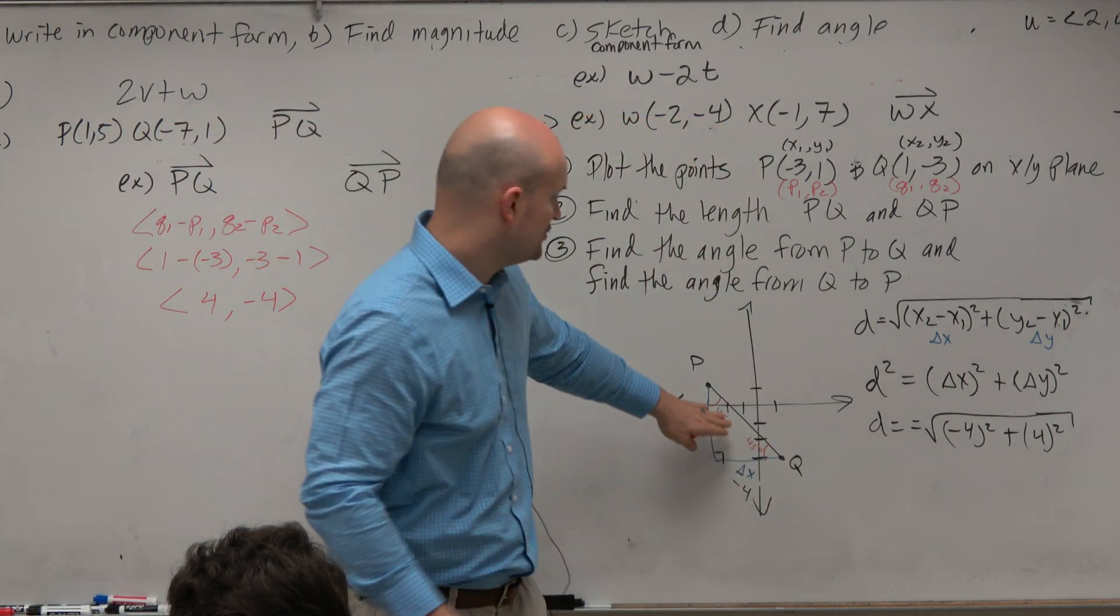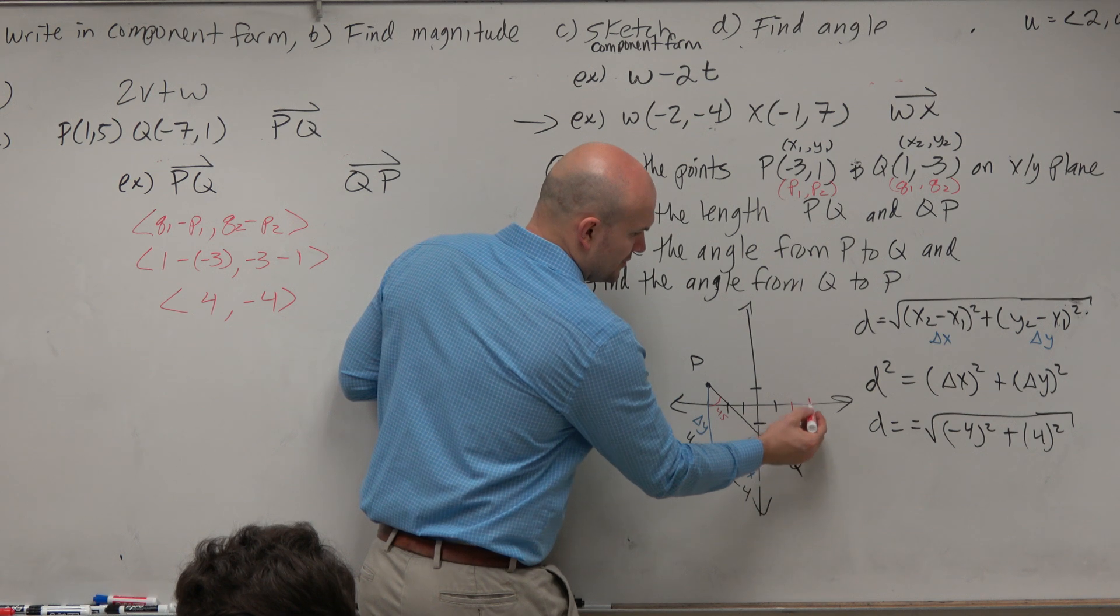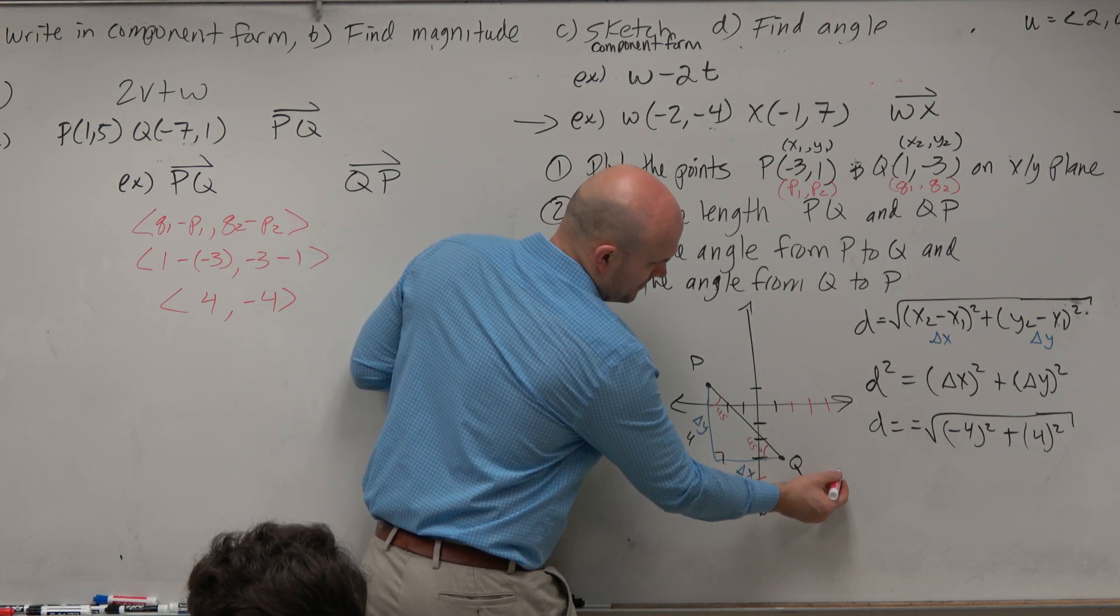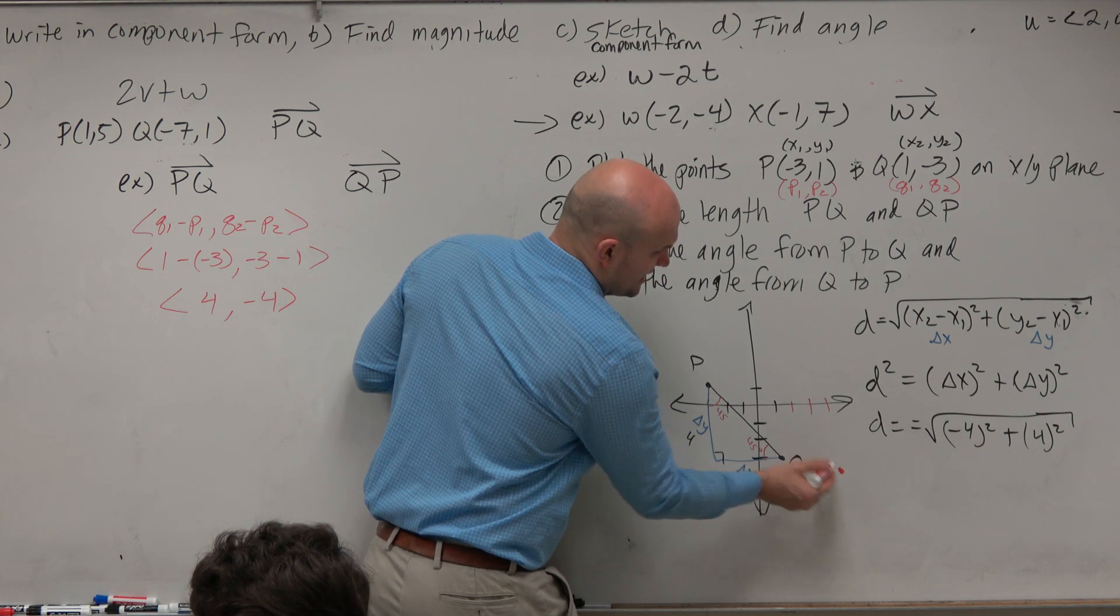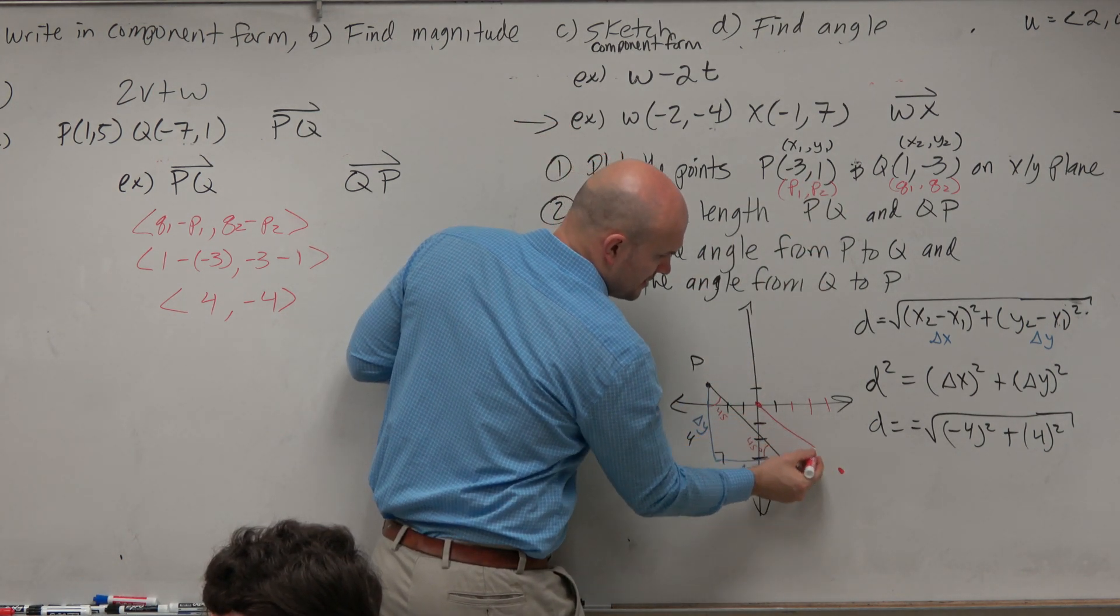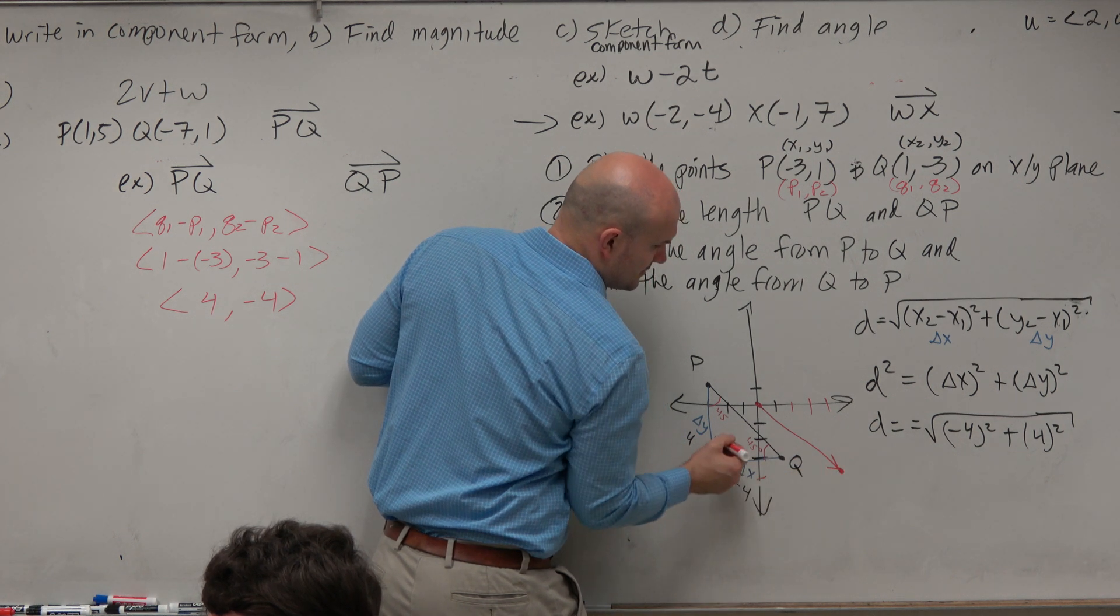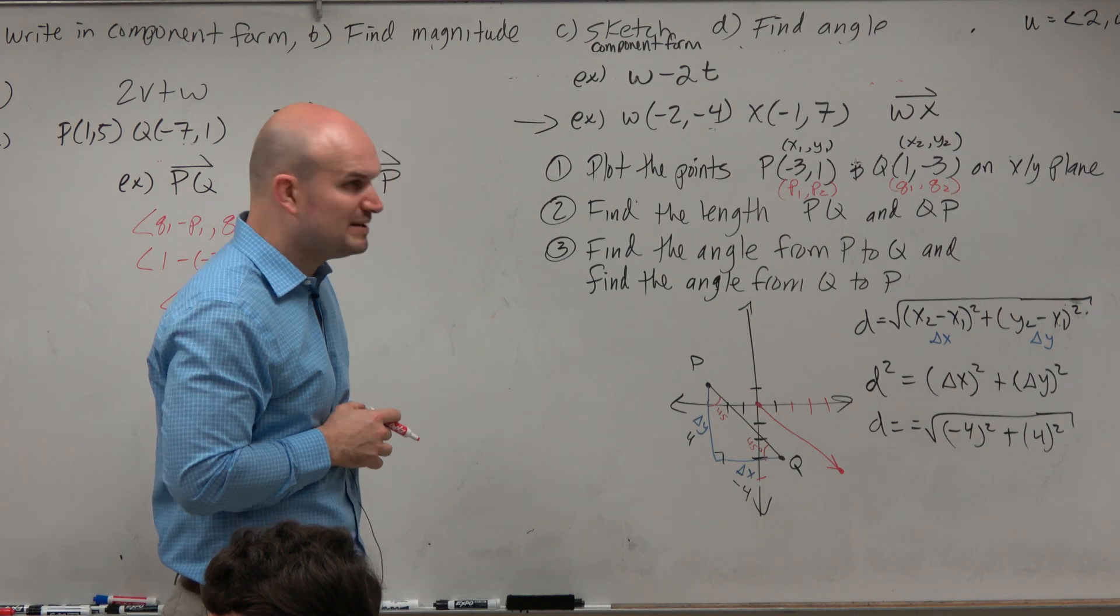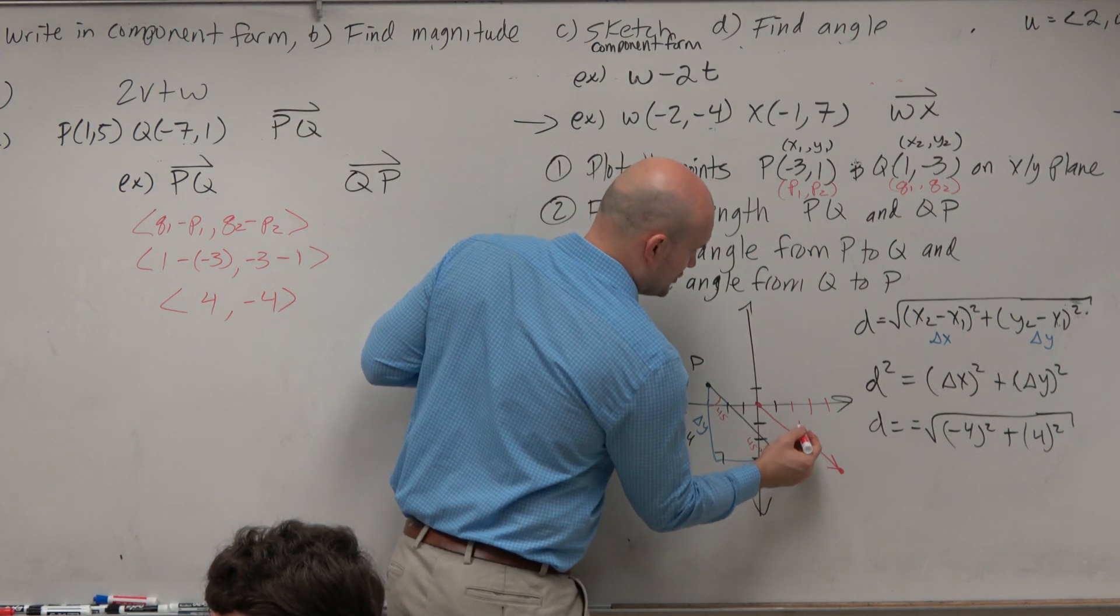Let's actually graph that right here. 1, 2, 3, 4. 1, 2. Remember, component form starts at 0, 0 as your initial point, and then extends there. So there is my component, my vector P to Q.